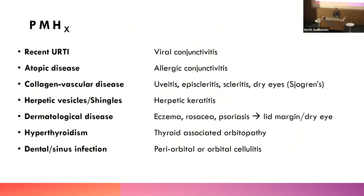Past medical history: a recent upper respiratory tract infection is often associated with viral conjunctivitis. Atopic disease goes together with allergic conjunctivitis. Collagen vascular or rheumatological conditions go together with uveitis, episcleritis, and scleritis. Sjögren's is not common but is a cause of very dry eyes. Uveitis, episcleritis, and scleritis tend to be immune-mediated conditions, so think about an underlying rheumatological disorder — rheumatoid arthritis is a common one, SLE less common.